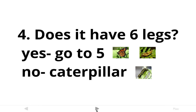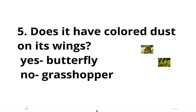We still need to narrow down the grasshopper and the butterfly. If you've ever touched a butterfly's wing, you know it has colored dust on it that you can rub off with your fingers. So let's ask: does it have colored dust on its wings? If yes, we know we're talking about a butterfly. If no, we're talking about the grasshopper. Now we've given a name to all six of our original organisms, and that's the end of our dichotomous key.